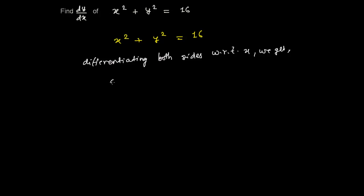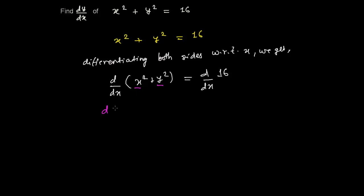We get d/dx of (x² + y²) on the left side, and d/dx of 16 on the right side. Now, x² and y² are separate terms, so I apply the rules: d(x²)/dx and then d(y²)/dx. The derivative of a constant is 0.